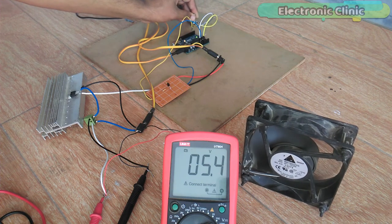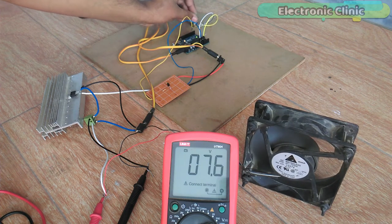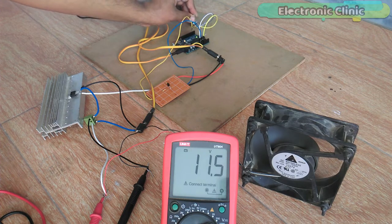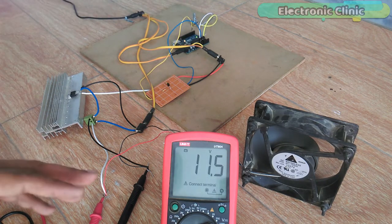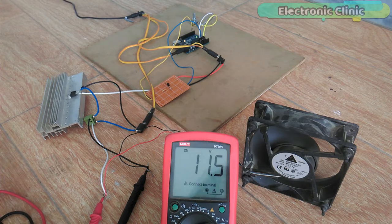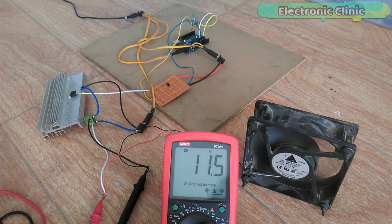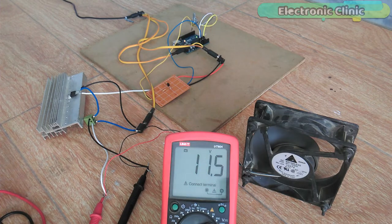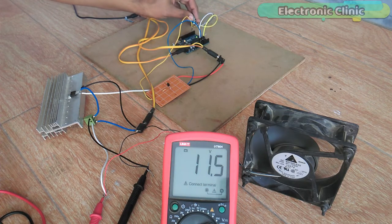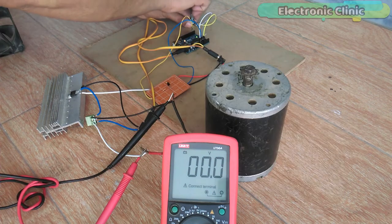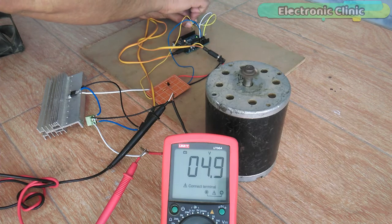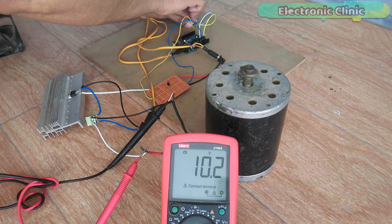In today's episode you will learn how to make a powerful variable power supply or motor driver using only one MOSFET IRF1404. This variable power supply can be used to power up different types of DC loads. You can power up DC fans or even large electric bicycle motors without any problem.